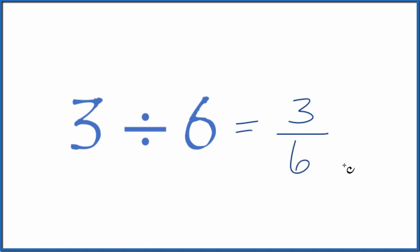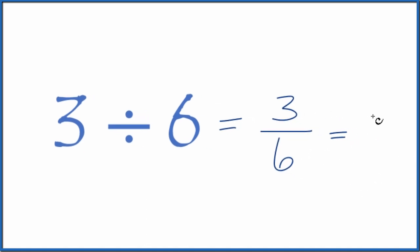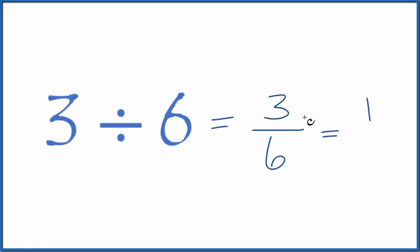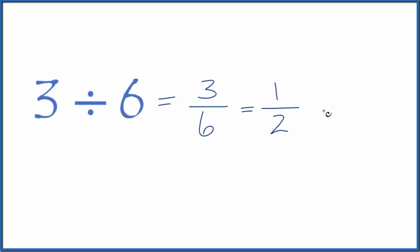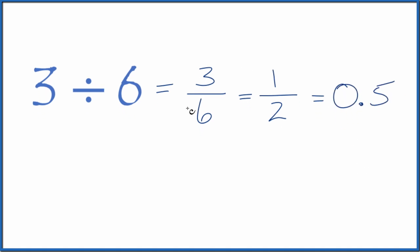You might recognize this as 1 half. In fact, we could simplify this because 3 goes into 3 one time - 3 divided by 3 is 1. 3 goes into 6 twice, so 1 half. Either you know 1 half is equal to 0.5 or you could look it up on a calculator.